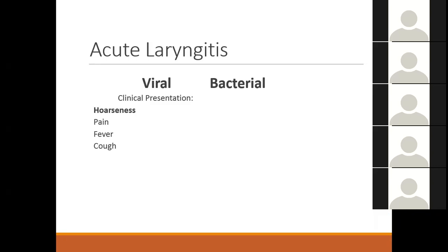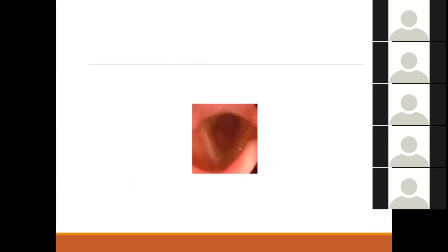The most important first treatment of any laryngitis is voice rest. If there is pain and you think it is bacterial laryngitis, you can give antibiotics and plenty of fluids. Gargles with antiseptic are not going to help in laryngitis — they will unnecessarily produce strain on your larynx because gargling produces sound. You do not want the larynx to function at that time; you want complete rest for your voice box.